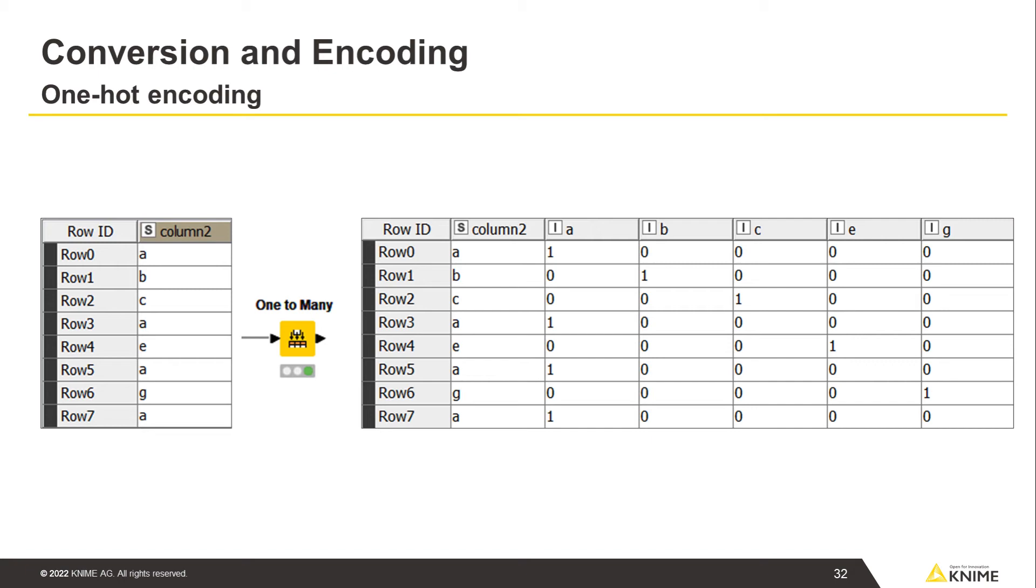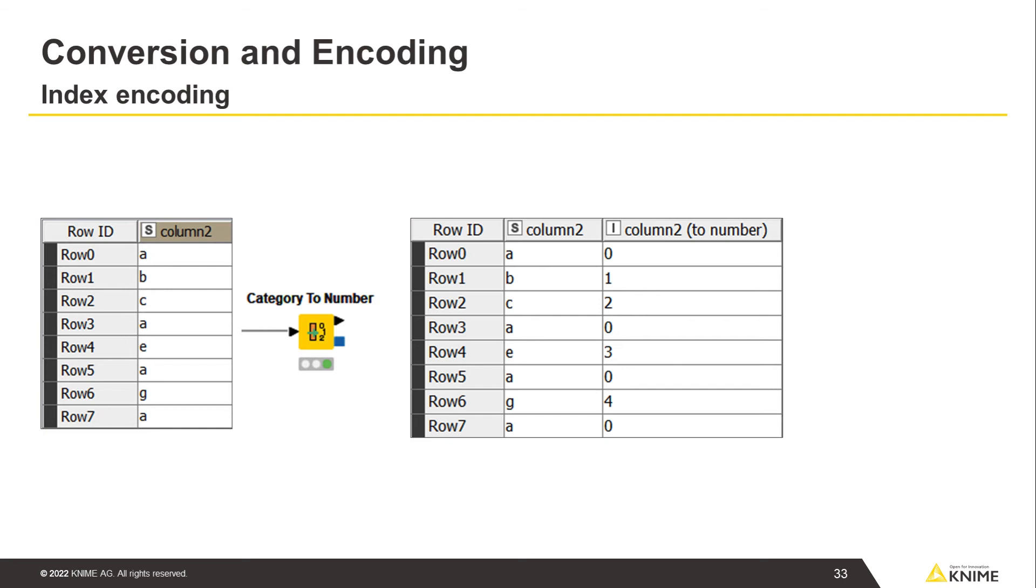Notice, though, that this operation can create a huge sparse feature space. Therefore, this step is the last, following data cleaning and reduction. Another encoding technique, index encoding, means mapping each nominal value to a number. This technique is especially useful with ordinal columns, and we can do it with the category-to-number node.